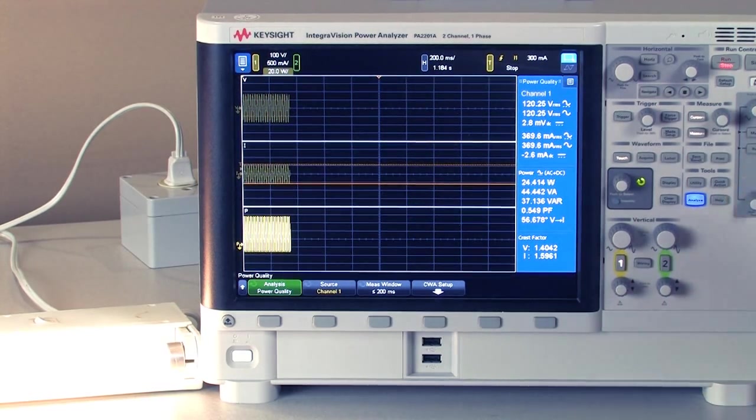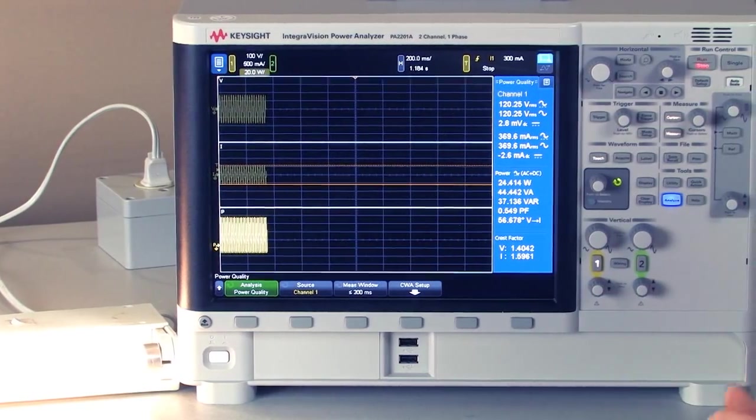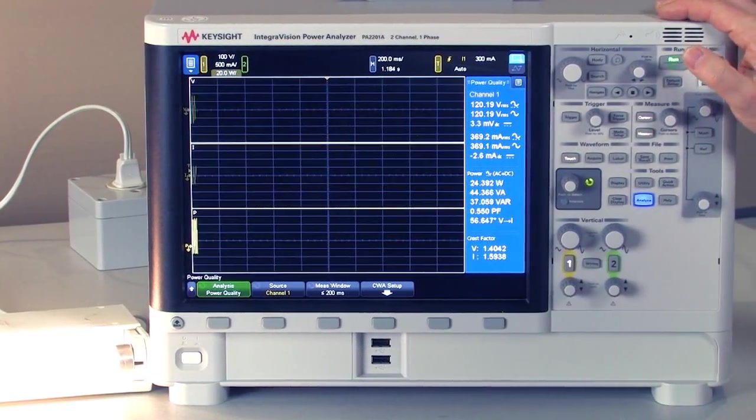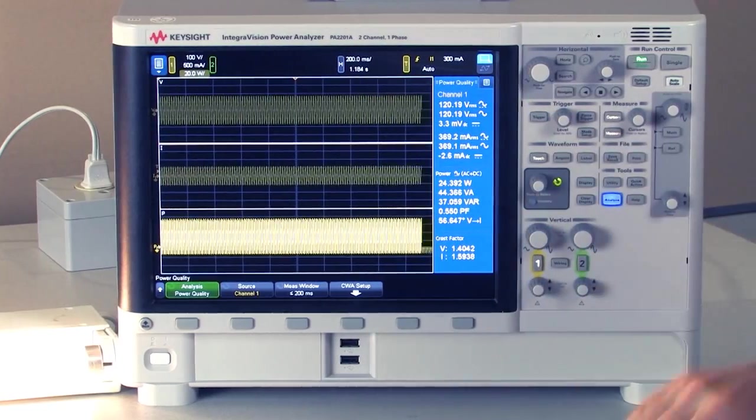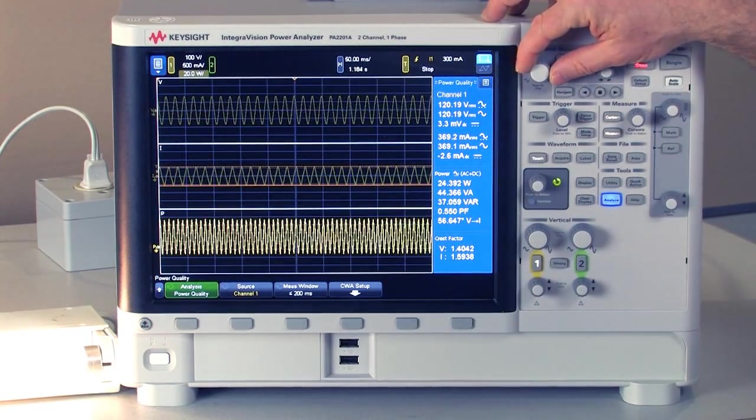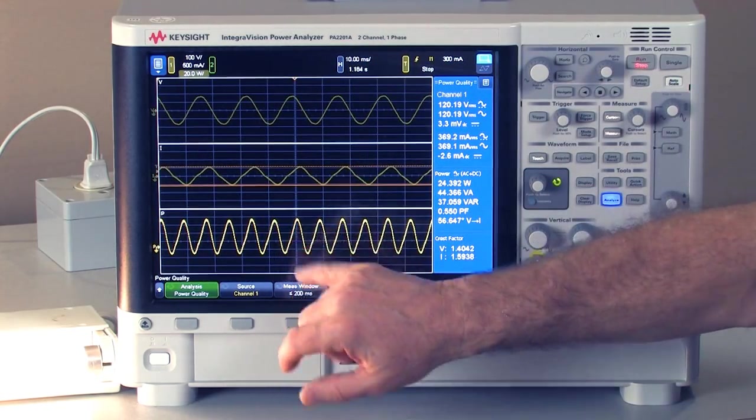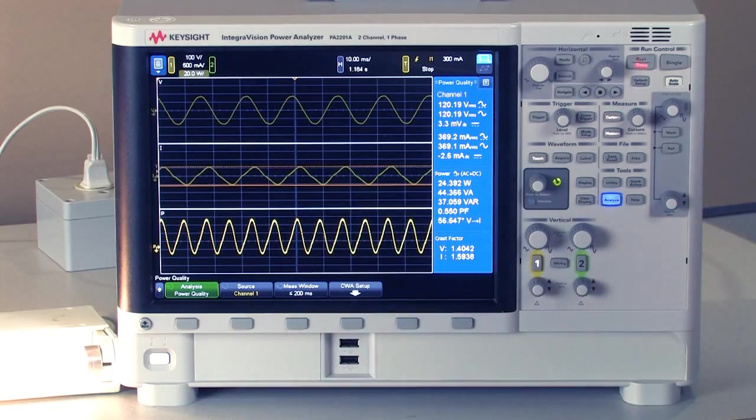What is nice about this panel is the analyze button gives you all of these measurements at one time, and when you're running you just see all of the measurements. If you want to stop it and zoom out, you can see the waveforms in more detail. That's the voltage waveform, that's the current waveform, and that's the combination, the power waveform.